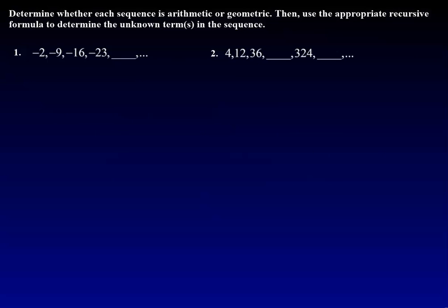Determine whether each sequence is arithmetic or geometric, then use the appropriate recursive formula to determine the unknown terms in the sequence. Arithmetic or geometric means we are adding or subtracting. If I look here, negative 9 minus negative 2, that's really a plus 2, so negative 9 plus 2 equals negative 7.